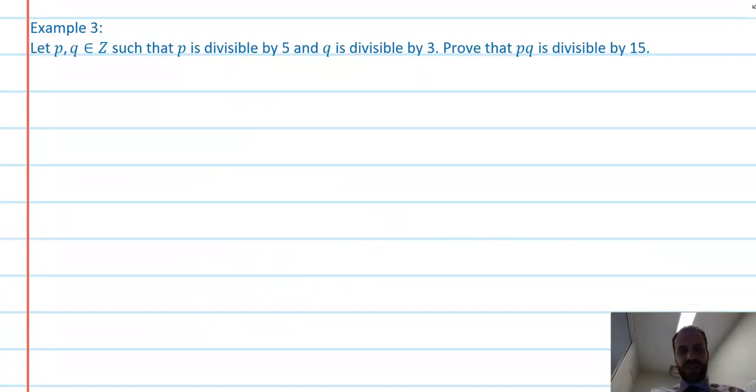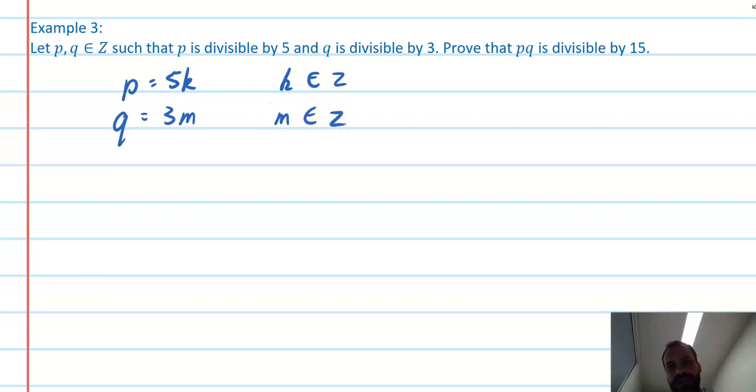Third example here, very similar technique. P and q are integers such that p is divisible by 5. I'm not even going to read through the whole question. I'm just going to start there. If p is divisible by 5, then p can be represented as p = 5k, where k is an integer. And q is divisible by 3. So q can be written as 3m, where m is an integer. Prove that pq is divisible by 15. All right, that should be pretty straightforward.